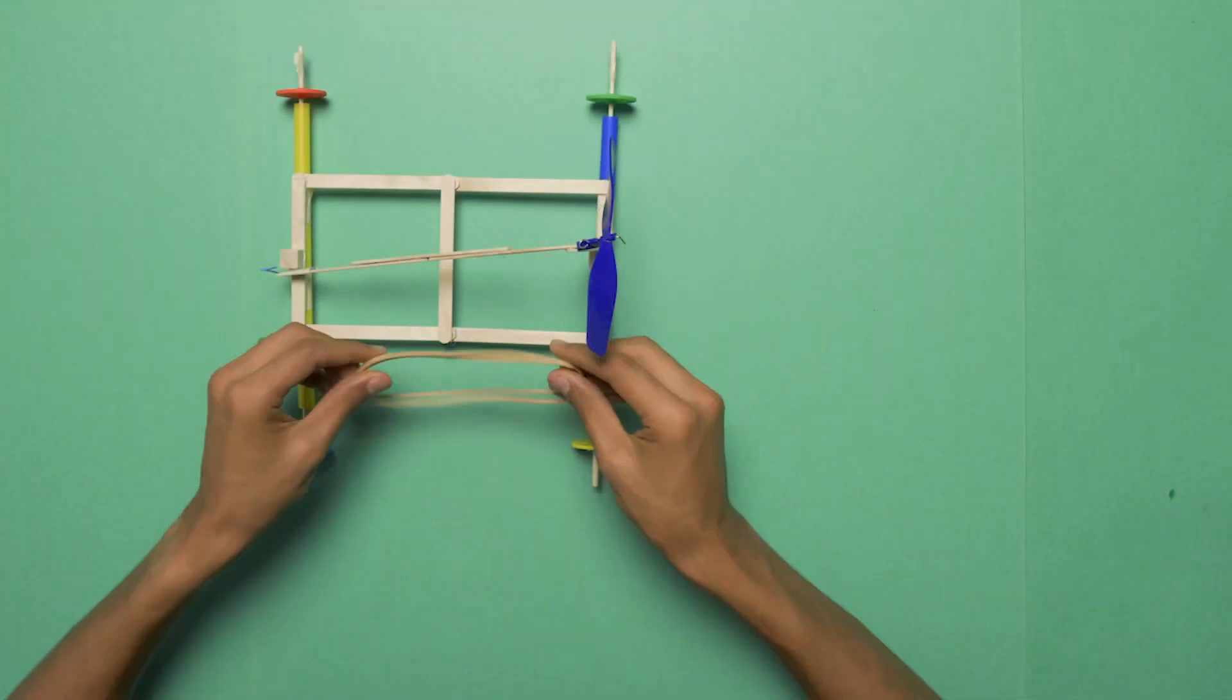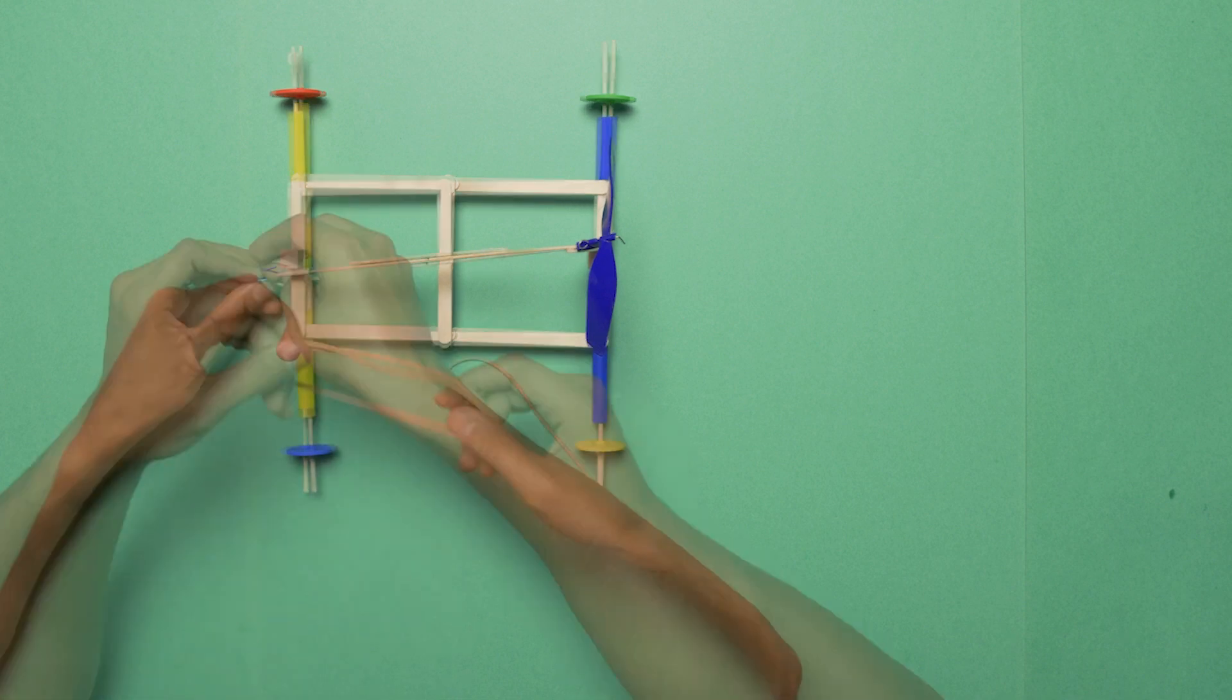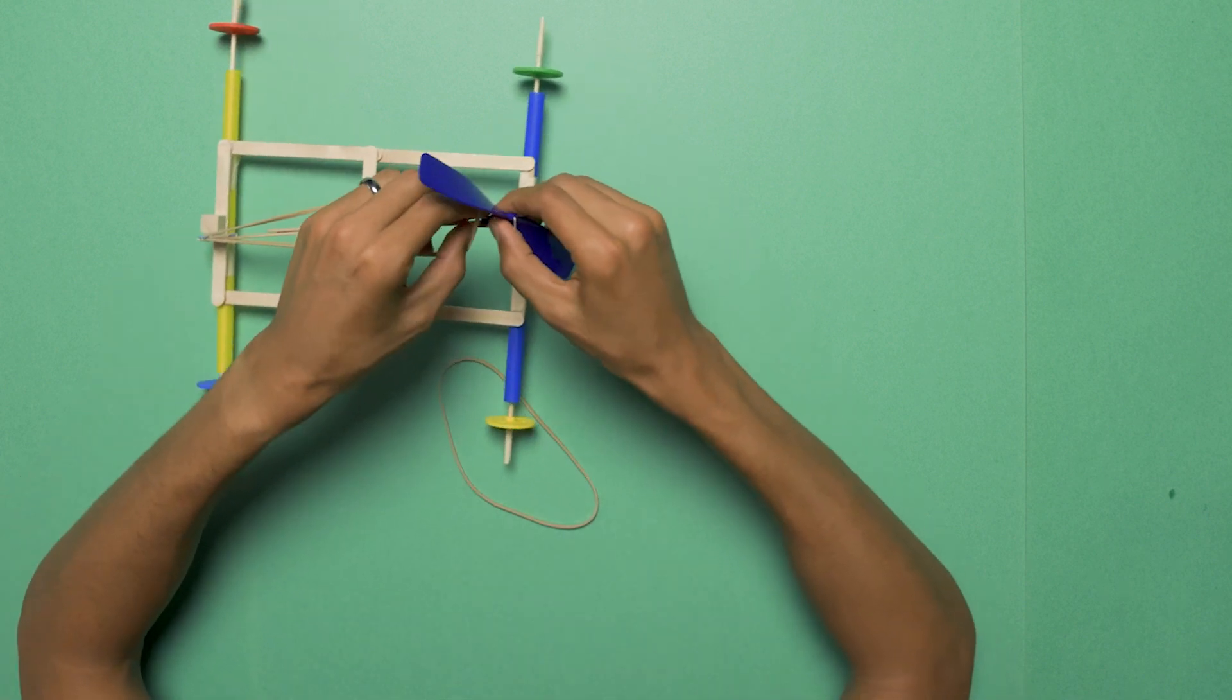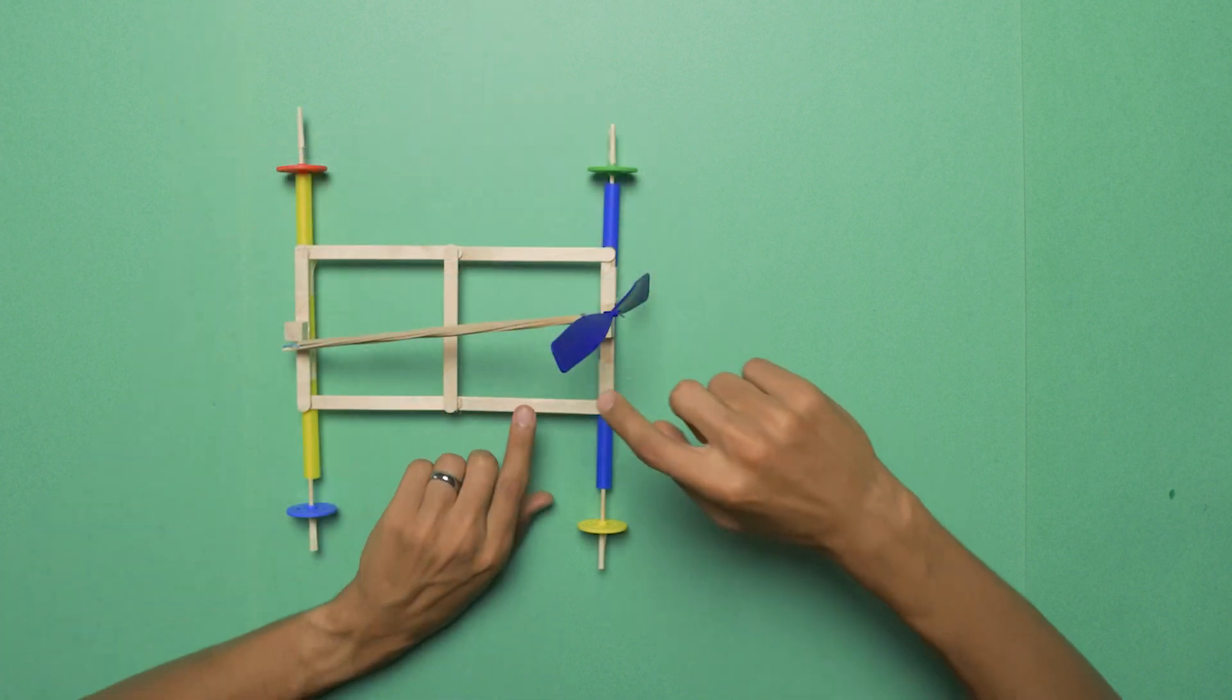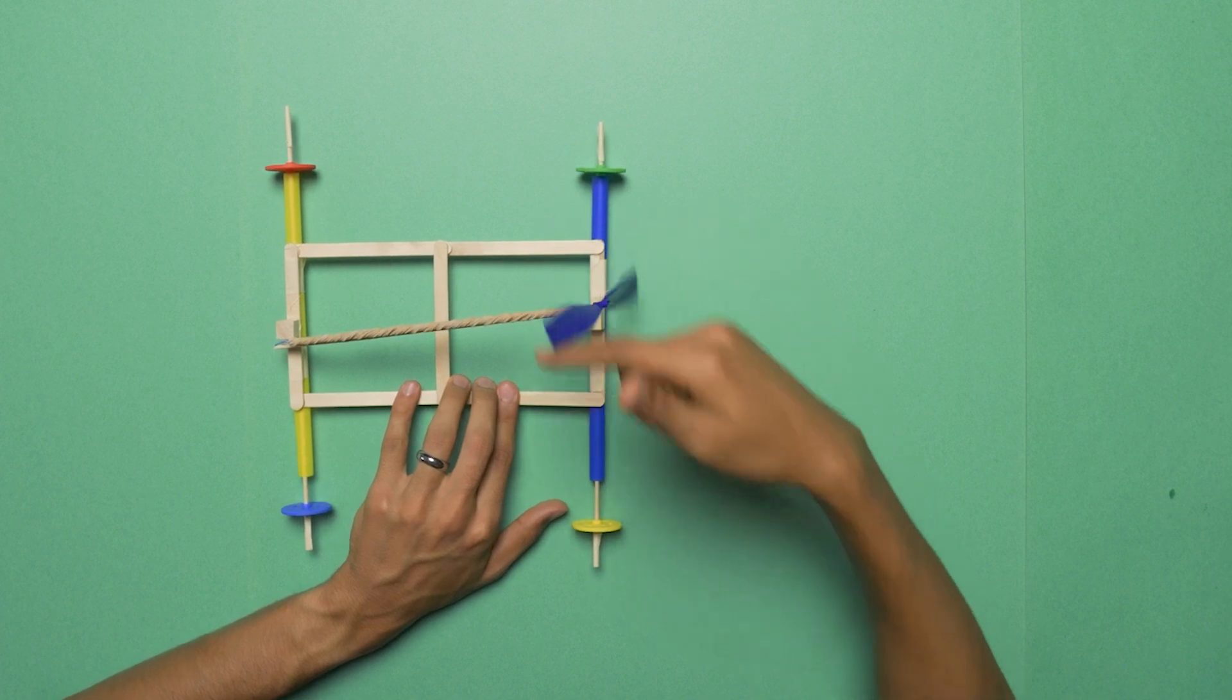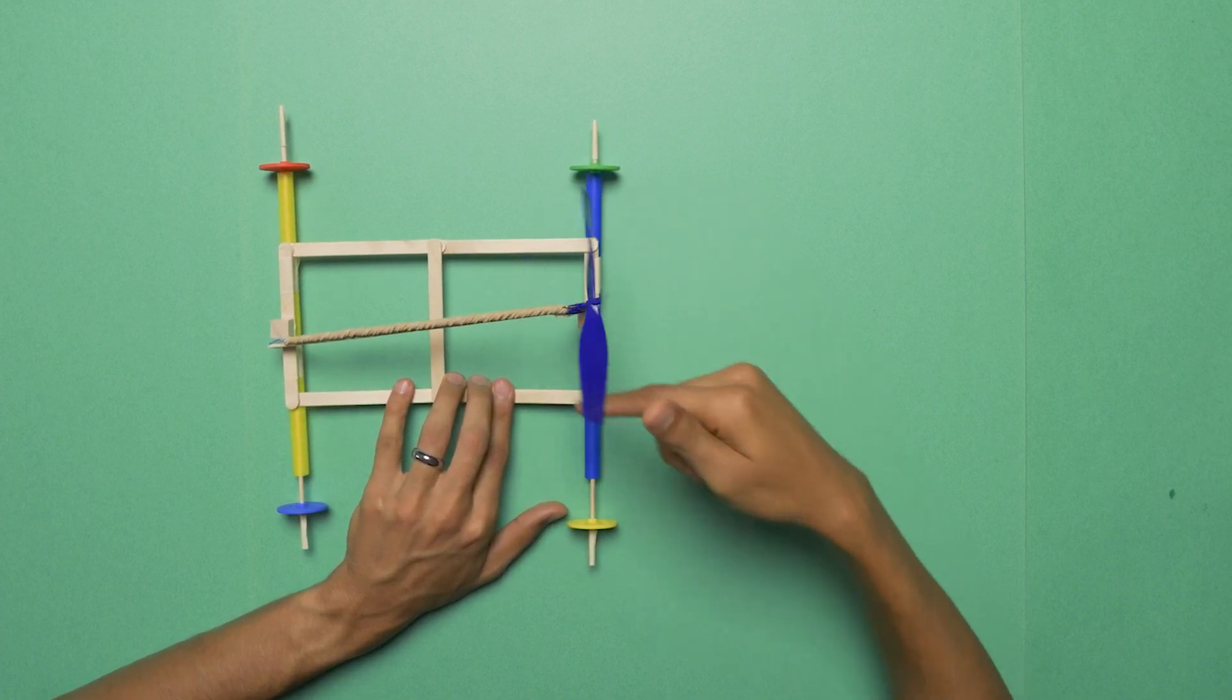For our final step, we're going to bring our two rubber bands. I like to do the paper clip end first, and then you're going to want to slip it right into the little hook. Then we'll turn our propeller clockwise. You'll probably want to go somewhere between 15 and 20 rotations.